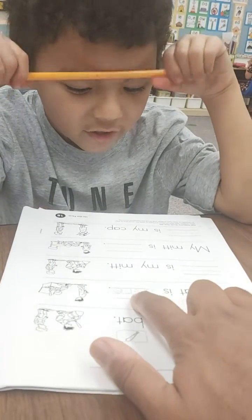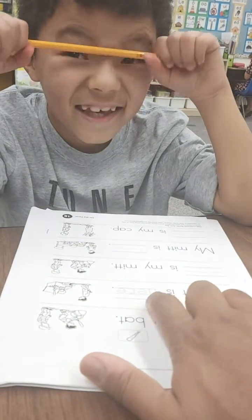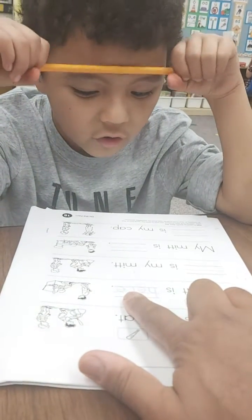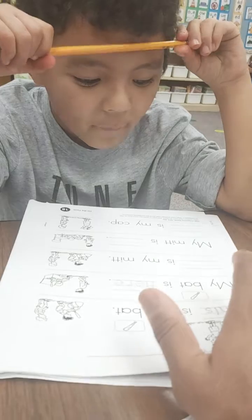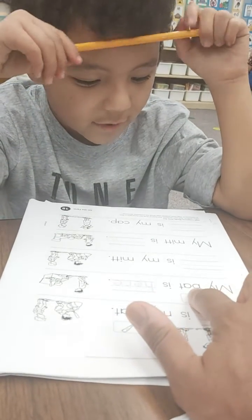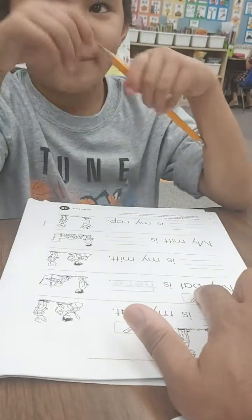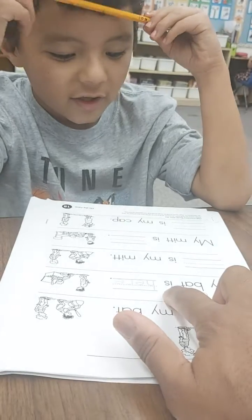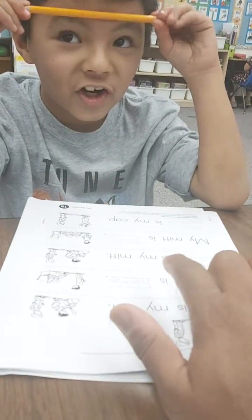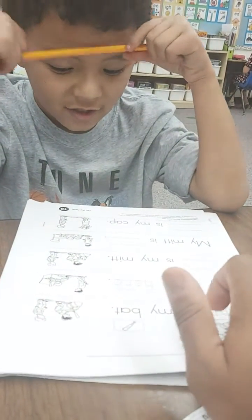Yes, that one's a little tricky. Yeah, 'my bat'... 'bat is here.' 'My bat is here.' Great job!